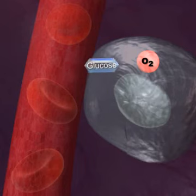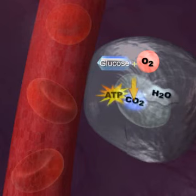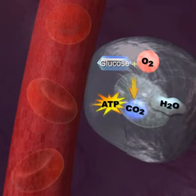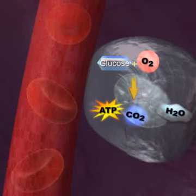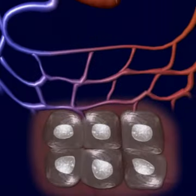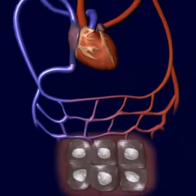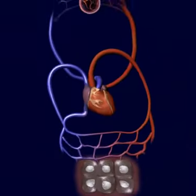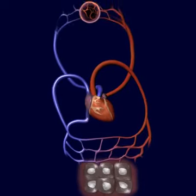All of these processes must be functioning effectively to provide an adequate supply of oxygen to the cells and to maintain the elimination of carbon dioxide from cell metabolism. Any disturbance in this homeostatic mechanism can be fatal within minutes.